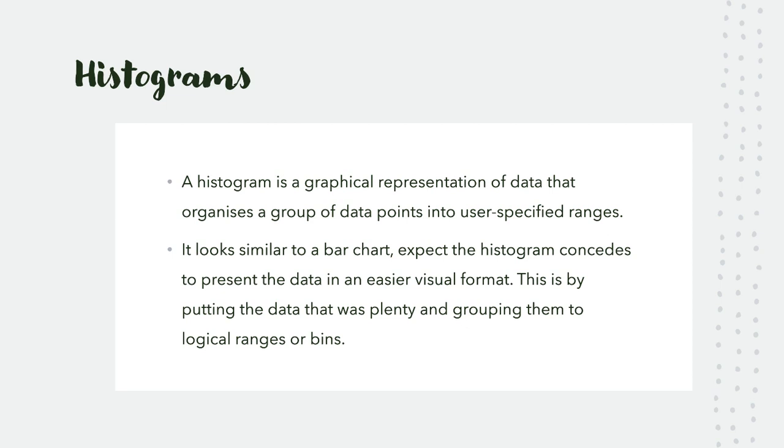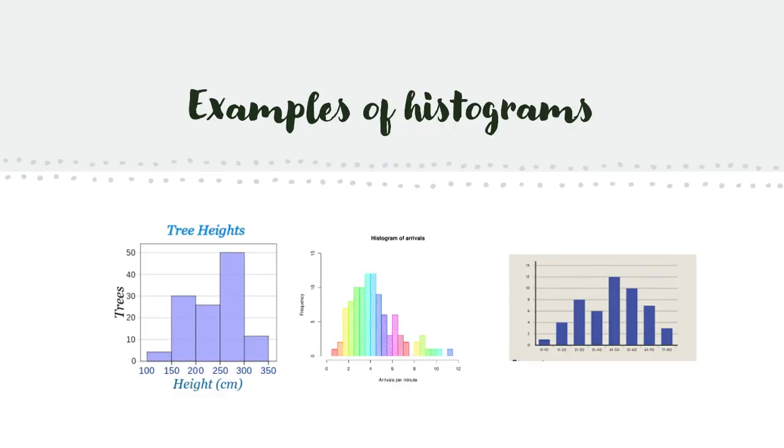Histograms are graphical representations of data that organize a group of data points using user-specified ranges. It looks similar to a pie chart, except the histogram can present the data in an easier visual format by putting the data into logical ranges or bins. Basically, the data is grouped with each other separately, which is what bar charts do.